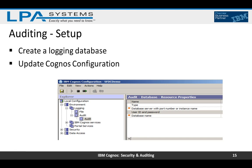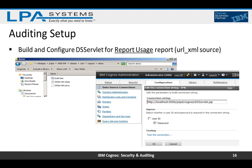The first thing we need to do to set up auditing is to create a database on the database server. This database needs to be in a different location from the content store database. Although a standalone database is not strictly necessary, it is considered best practice because it helps avoid contention issues. Once that database is created, we can update Cognos Configuration to point to it.